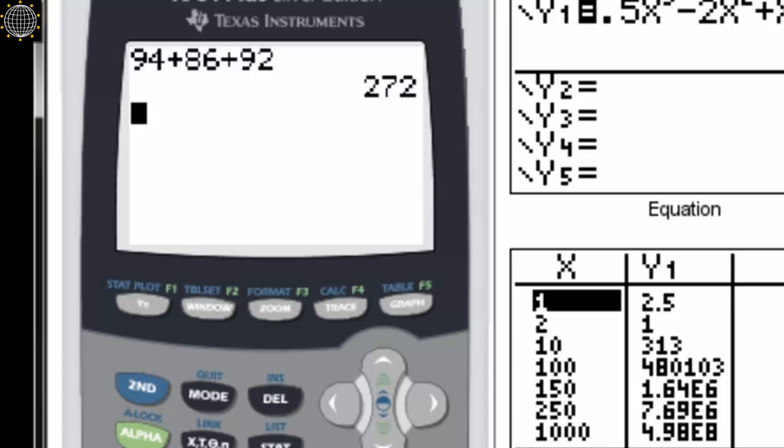We take 94 and 86 and 92, and then we total them. We get a total of 272, and then we would divide it by how many test grades Johnny had, in this case 3.